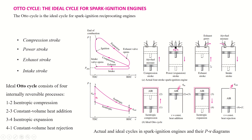In the third stroke, the piston reaches its bottom dead center and then starts moving up, decreasing the volume. At this moment the exhaust valve opens and the burnt gases flow out of the engine. When the piston moves to its top dead center, all the flue gas is exhausted from the engine.